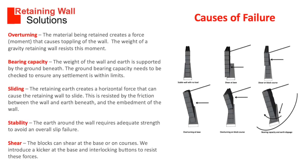Let's look at what causes the failure of a retaining wall. Overturning: the material being retained creates a force, a moment, that causes toppling of the wall. The weight of the gravity retaining wall resists this moment.